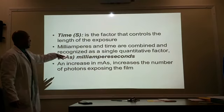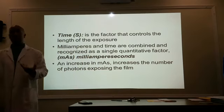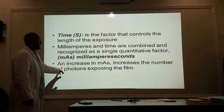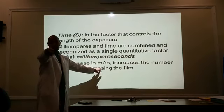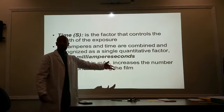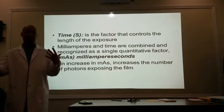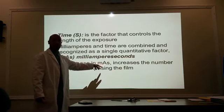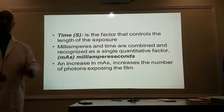Milliamperage and time are combined and recognized as one single quantitative factor — mAs, milliampere-seconds. An increase in mAs increases the number of photons exposing the film. So you can either double it as a whole as one unit of mAs, or you can double MA, or you can double time. Whatever you're doubling, it's going to be double exposure. Twice the MA or twice the seconds — you're doubling it.